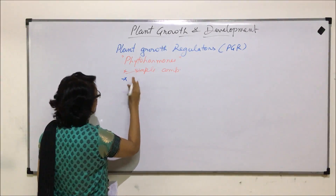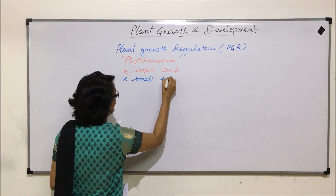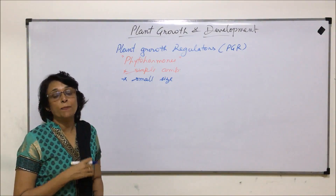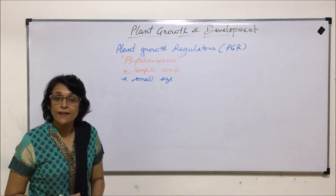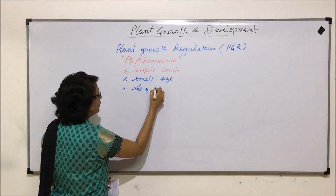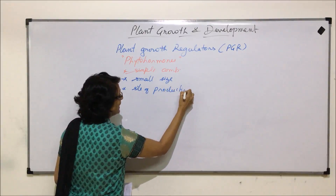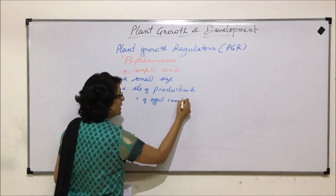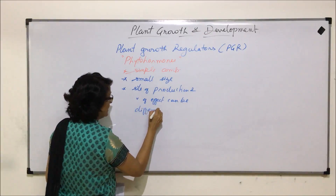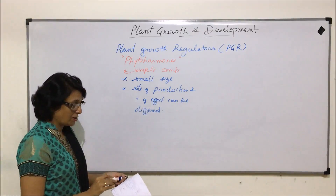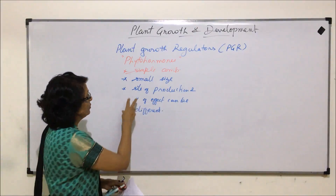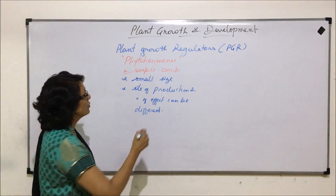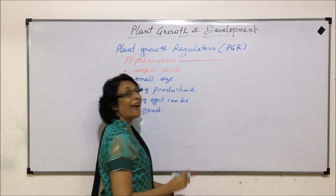Phytohormones have small size in terms of molecular weight, and the site of their production is different from the place where they perform their role or show their effect. We will see how the site of production and the site of effect can be different when we come to specific phytohormones.